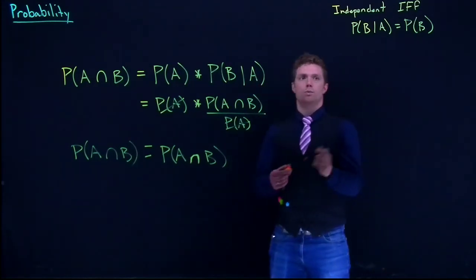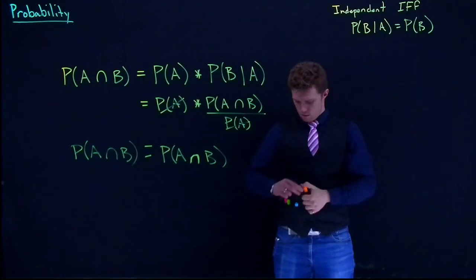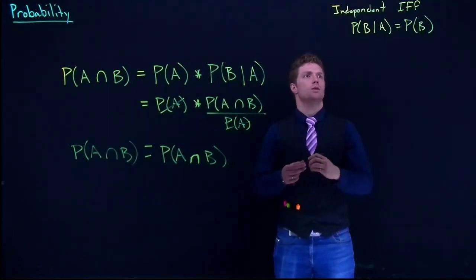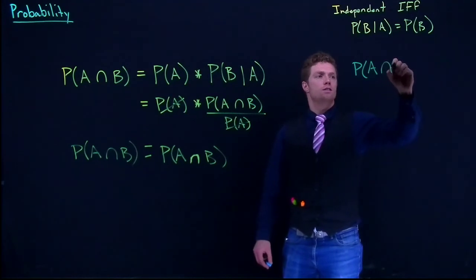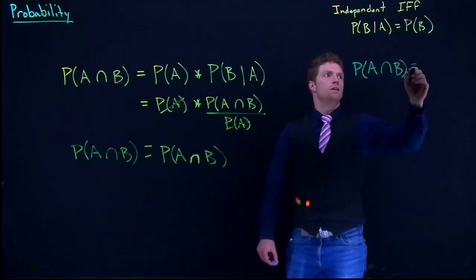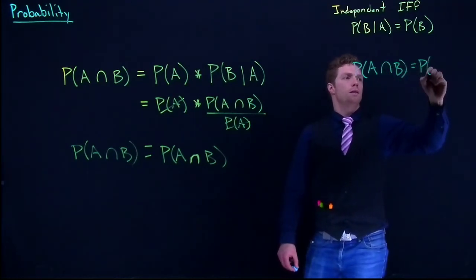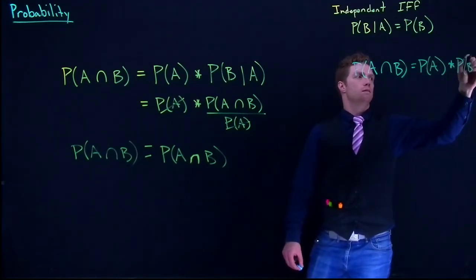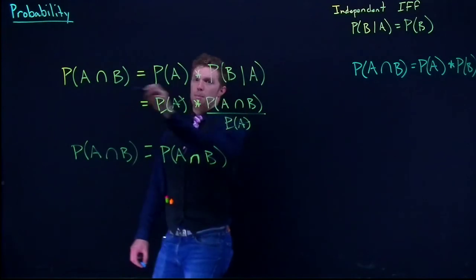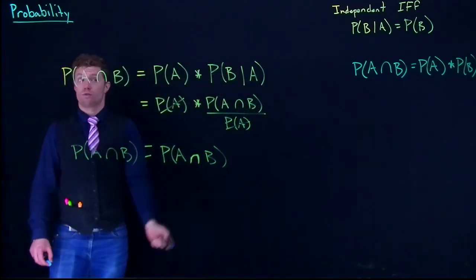So we'll drop to just—it's right over here in blue—probability of A intersect B is equal to the probability of A times the probability of B. But this is the generic one; this works for both